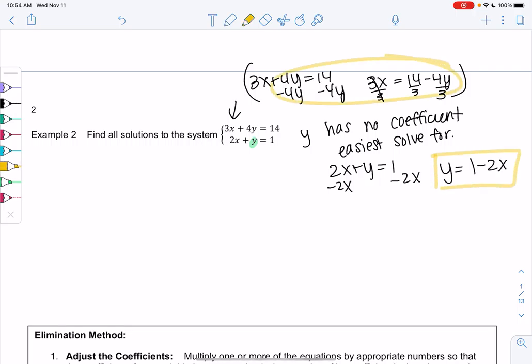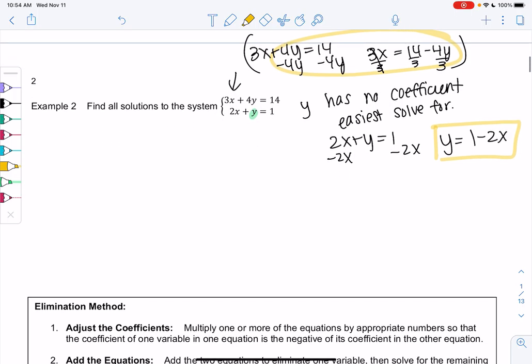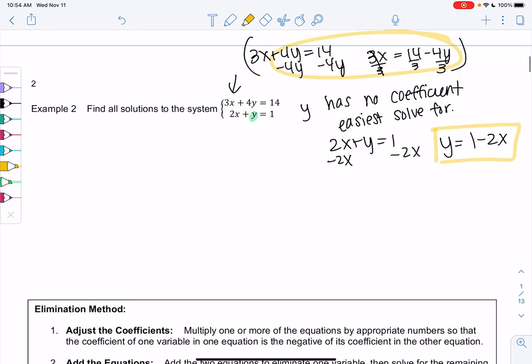Instead, I'm going to solve. We have 2x plus y equals 1 minus 2x minus 2x. So y is 1 minus 2x. And I think that looks way easier than all that. So that is step 1. Solve for one of the variables. I solve for y.